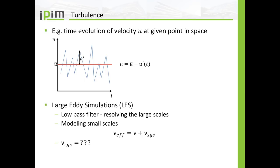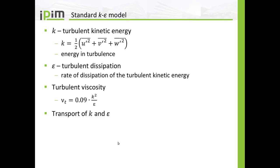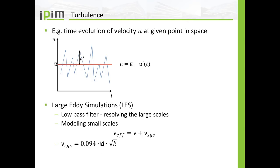Also in LES, very similar to the RANS models, we use an effective viscosity which is the sum of the physical viscosity and a model viscosity called the subgrid scale viscosity. In most LES simulations it is given by a constant value of 0.094 multiplied by delta and multiplied by the square root of K, the turbulent kinetic energy you also saw in the standard k-epsilon model. This delta is mostly calculated by taking the volume of your cells and taking the cube root of the volume of each cell. For two-dimensional simulations this is slightly different, but in 3D you take the cube root of your cell volumes.